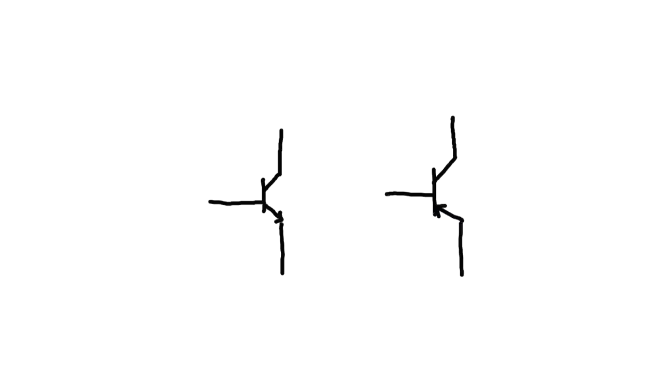Hello, let's revisit the bipolar junction transistor. We are going to explore the two types: npn and pnp transistor. As you can see from the arrow, the direction of the current which the arrow indicates classifies whether the transistor is npn or pnp.